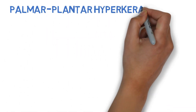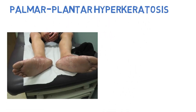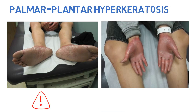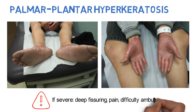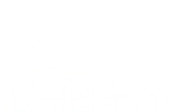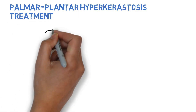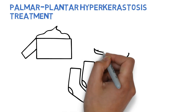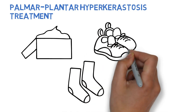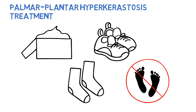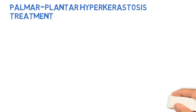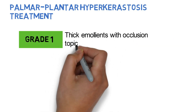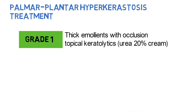Palmar plantar hyperkeratosis is characterized by redness or yellowish thickening of the palms and soles at pressure points. More severe eruptions may lead to deep fissuring, pain, and difficulty with ambulation. To treat palmar plantar hyperkeratosis, counsel all patients about gentle skin care and reducing friction with supportive socks or shoes. Patients should be counseled to not walk around barefoot or wear tight or ill-fitting shoes. For grade 1, the patient can use thick emollients at bedtime with occlusion as well as topical keratolytics such as urea 20% cream.